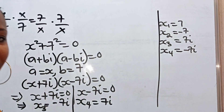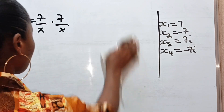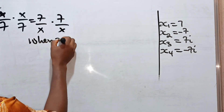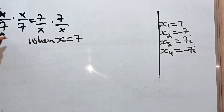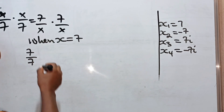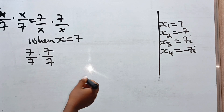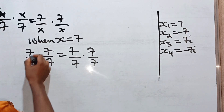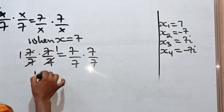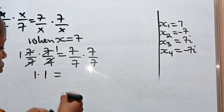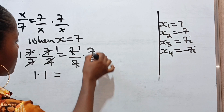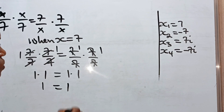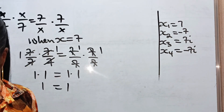When x is equal to 7, we have 7 divided by 7 multiplied by 7 divided by 7 is equal to 7 over 7 multiplied by 7 over 7. Each fraction divides to 1, so we have 1 multiplied by 1 is equal to 1 multiplied by 1. So 1 equals 1, which shows that x equals 7 is a solution.